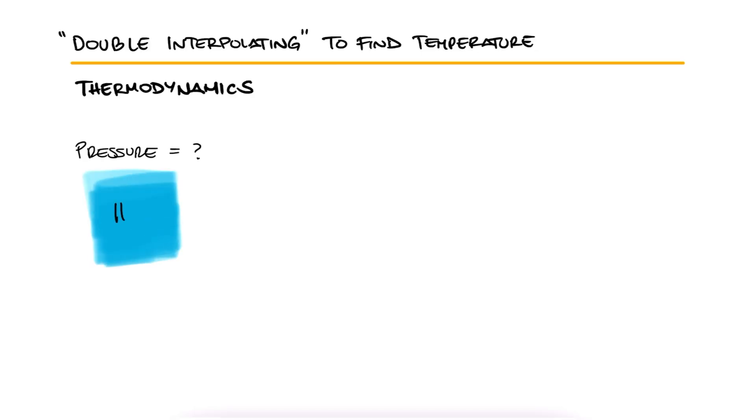Find the pressure of water and what phase it is in if it has a specific volume of 0.9 cubic meters per kilogram and a temperature of 180 degrees Celsius. Remember to try solving this problem yourself before watching the solution.